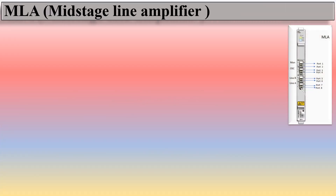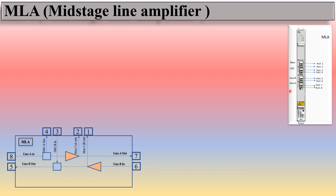This is the MLA mid-stage line amplifier — the physical representation of MLA. In MLA there are eight ports. Ports one and two belong to the monitoring port. Ports three and four belong to the OSC port. Ports five and six belong to Line B, and ports seven and eight belong to Line A. Port two is monitoring A out and port one is monitoring B out.